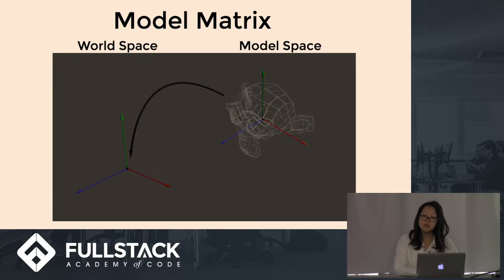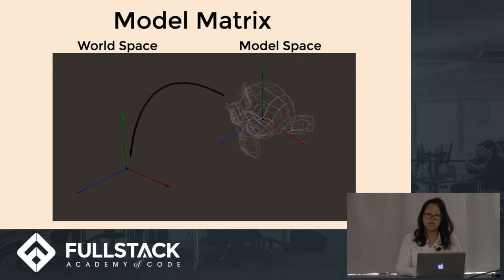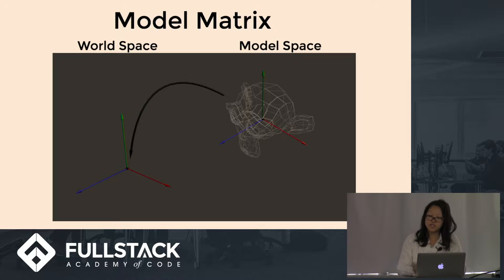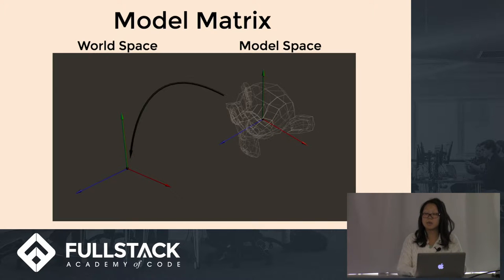The model matrix has two main components: the model space and the world space. Looking at the model to the right — this is the monkey, Suzanne — you'll see the green, blue, and red arrows, which are what we call vertices. Vertices, or the singular vertex, describe a point in 3D graphics — more specifically, a position of a point in 2D or 3D space with certain attributes.